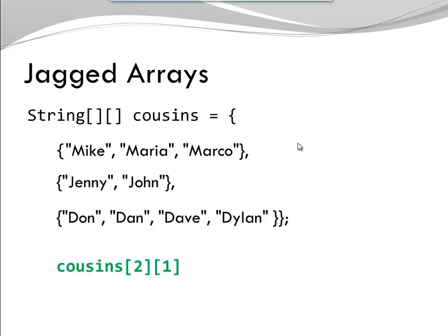Let's say I would like to access cousins 2, 1. Which one would it be? Once again, we have the same pattern. First index shows us which array we should choose. So we have 0, 1, 2. So we're in this row here. Second index shows us which element. So 0, 1. We're talking about Dan.